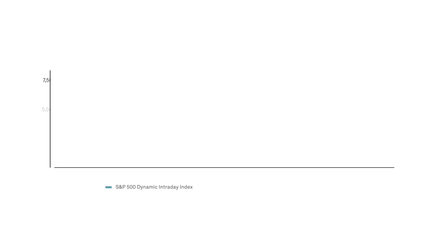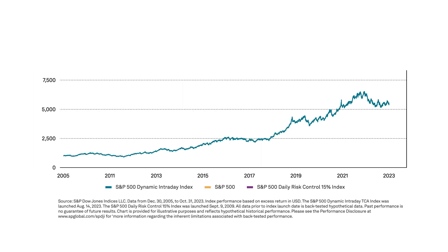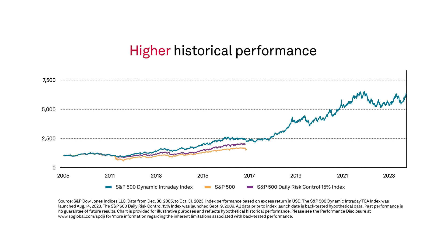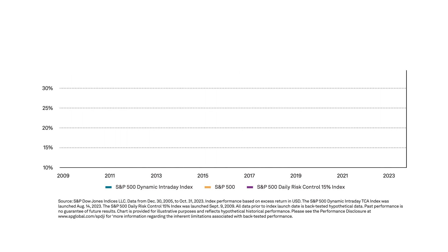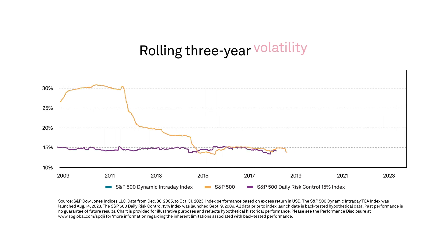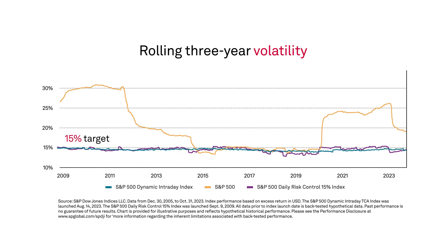Back-tested data shows that the S&P 500 Dynamic Intraday TCA Index has delivered higher historical performance than an index that uses traditional risk-control techniques. Plus, the S&P 500 Dynamic Intraday TCA Index's rolling three-year volatility has remained very close to the 15% target historically.